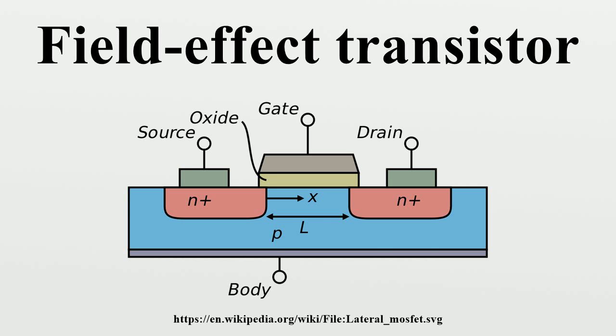A gate length of 1 micrometer limits the upper frequency to about 5 GHz, 0.2 micrometers to about 30 GHz. The names of the terminals refer to their functions.